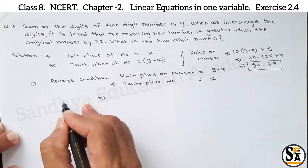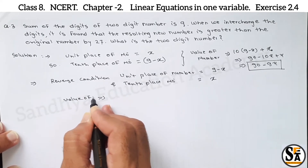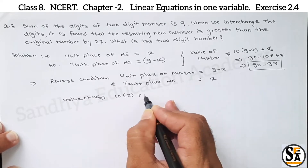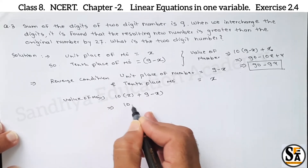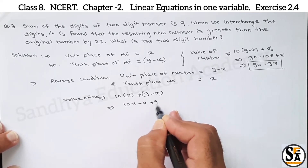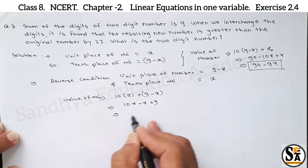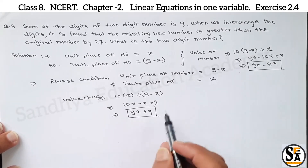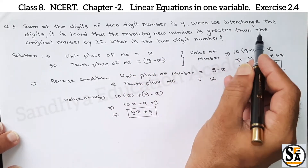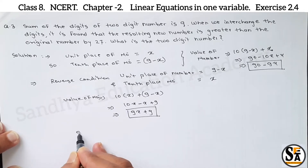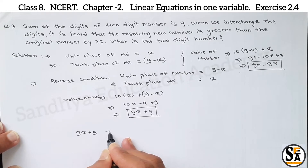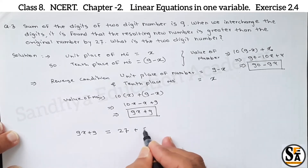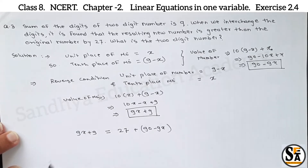In the reverse condition, the value of the new number: multiply the 10th place by 10, that is 10x, plus unit place as it is, 9 minus x. We get 10x minus x plus 9, that is 9x plus 9. This will be our second number. The relation given is the resulting new number is greater than the original by 27. So 9x plus 9 equals 90 minus 9x plus 27. This is the equation we got.